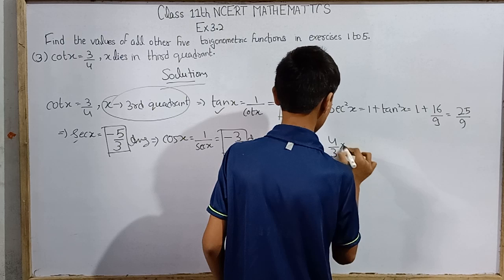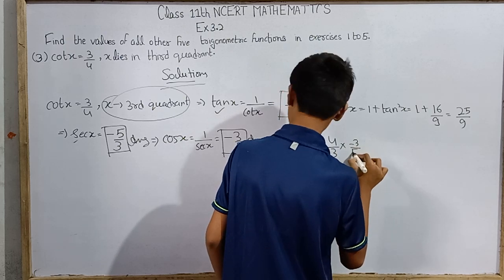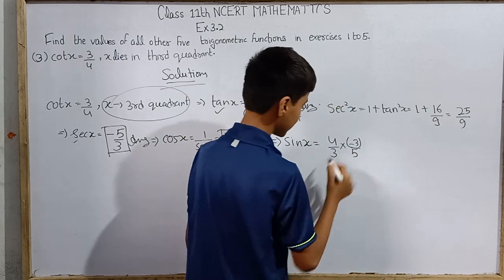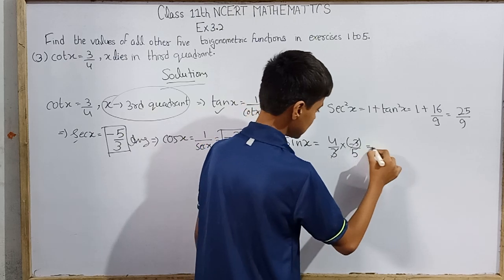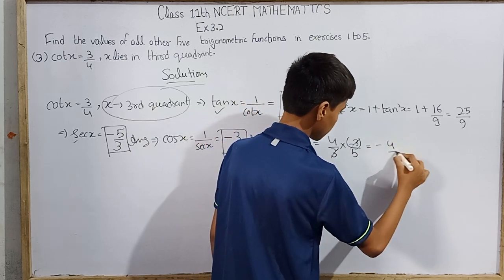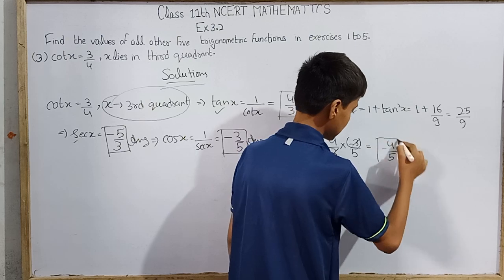This will be 4/3 times minus 3/5. Let's write this in brackets. This will cancel - minus 4/5. So for this angle, the value of sin(x) is minus 4/5.